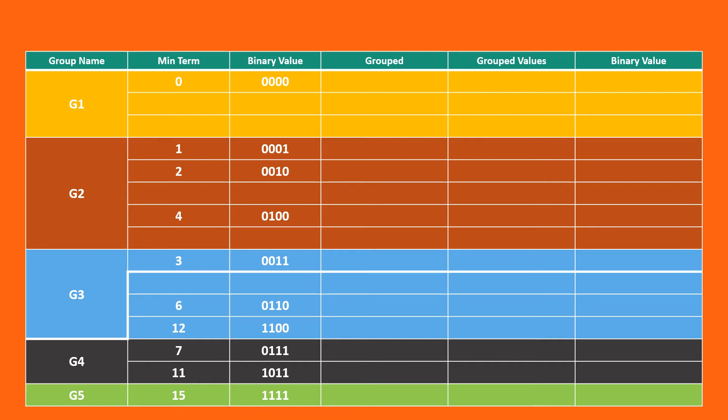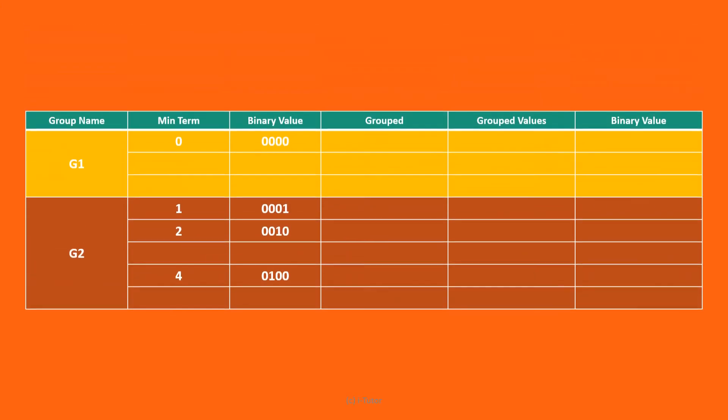Grouping can be done only between adjacent or successive groups, so let's start with G1 and G2. Comparing 0 with 1, we can see the last bit has the difference. Thus the grouping can be done as 0,1 with binary value 000 underscore.